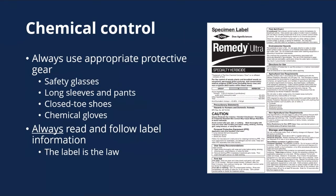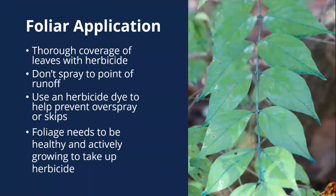Let's focus a little on chemical control since it's probably the most complex. Always use appropriate protective gear — safety glasses, long sleeves, long pants, and so forth — and read the label, because the label is the law. For herbaceous plants, most applications are foliar unless you're doing a soil application. With a foliar application, thoroughly cover the leaves with herbicide but not to the point it's running off. I like using an herbicide dye to prevent over-spray or skips. Foliage needs to be healthy and actively growing to take up herbicide — a plant under drought stress or starting to shut down in fall won't take it up as effectively.